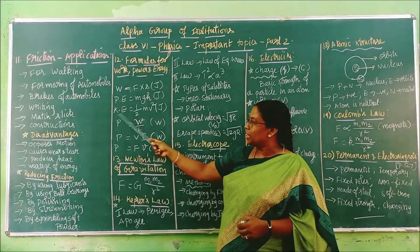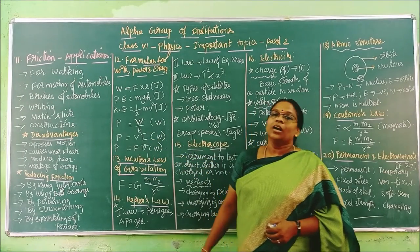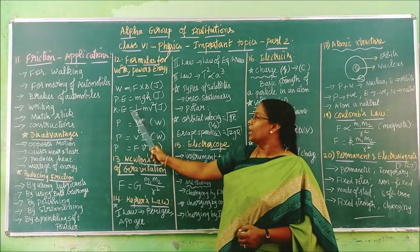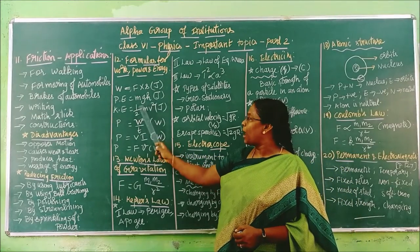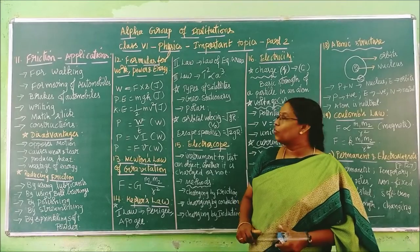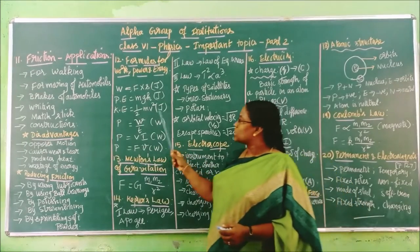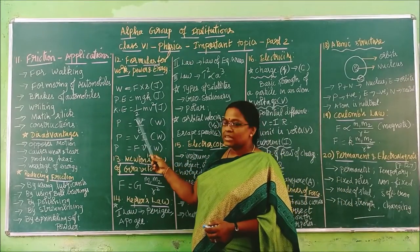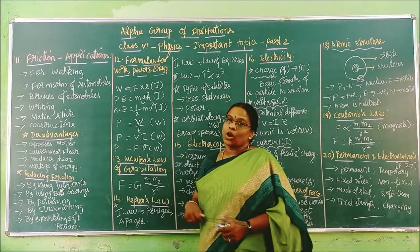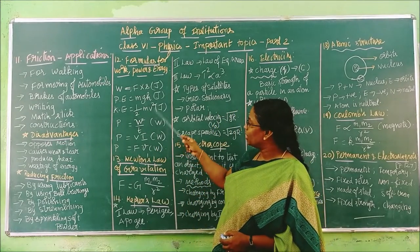Then kinetic energy — I have written it as KE — is equal to half mv². Its unit is Joule. Half is the number, M is the mass, V is the velocity.